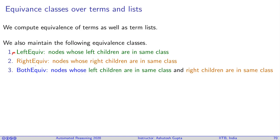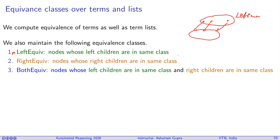The first is left-equi: a set of nodes whose left children are in the same equivalence class. Similarly, we define right-equi. We also define a third equivalence class, both-equi, where both the left and right children have the same equivalence classes. For example, two nodes where their left children have the same equivalence class and their right children also have the same equivalence class are both-equi.